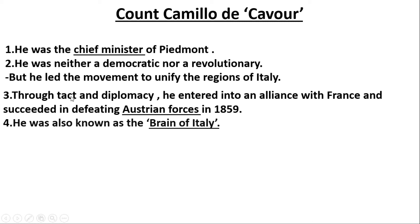Cavour's approach was through tact, diplomacy, and political maneuvering. He allied with France in 1859, which helped weaken Austrian control over northern Italy.